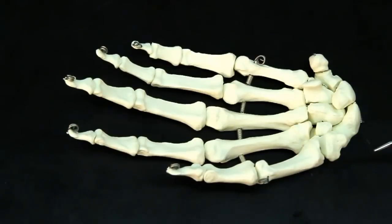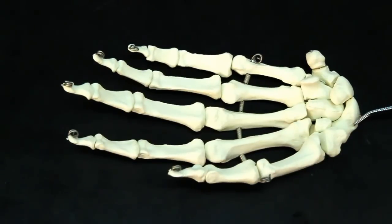If we start looking at the carpal bones, we'll notice there's eight of them, two rows of four. If we start right here, this particular bone, this one right here, is the scaphoid.